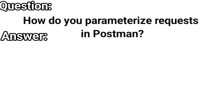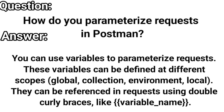How do you parameterize requests in Postman? You can use variables to parameterize your requests. These variables can be defined at different scopes: global, collection, environment, etc. They can be referenced in a request using double curly braces.